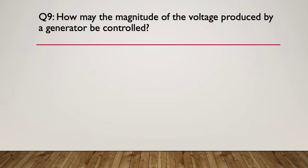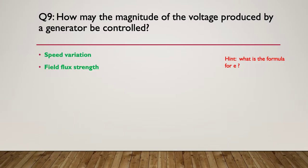Question nine: how may the magnitude of the voltage produced by a generator be controlled? Think about the formula for E — what things in that formula can we control? The only things that make any difference are the speed variation (how fast the armature is spinning, meaning how fast the conductors are cutting the magnetic field) and the field strength (the amount of flux). Typically we change the field strength to change the voltage.